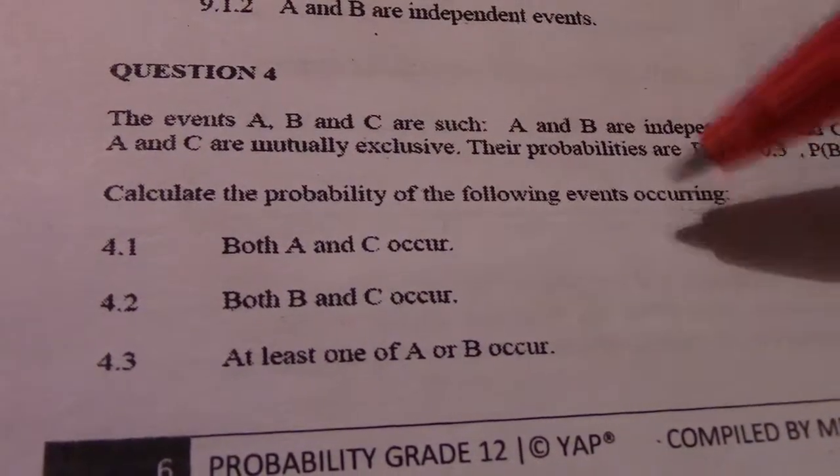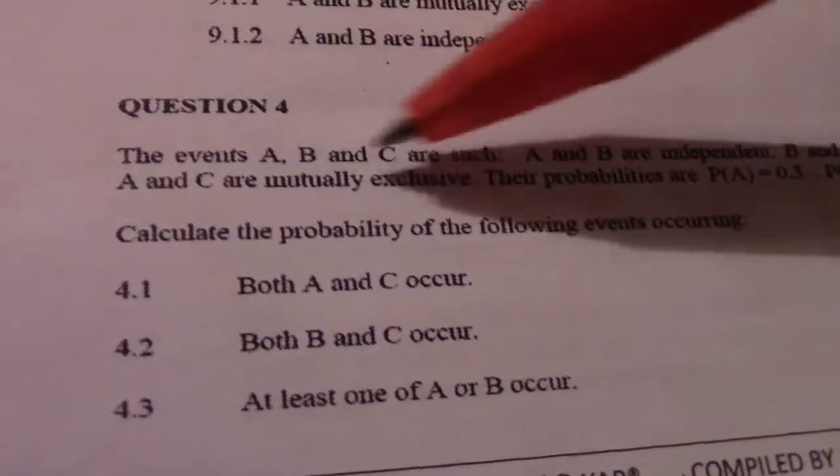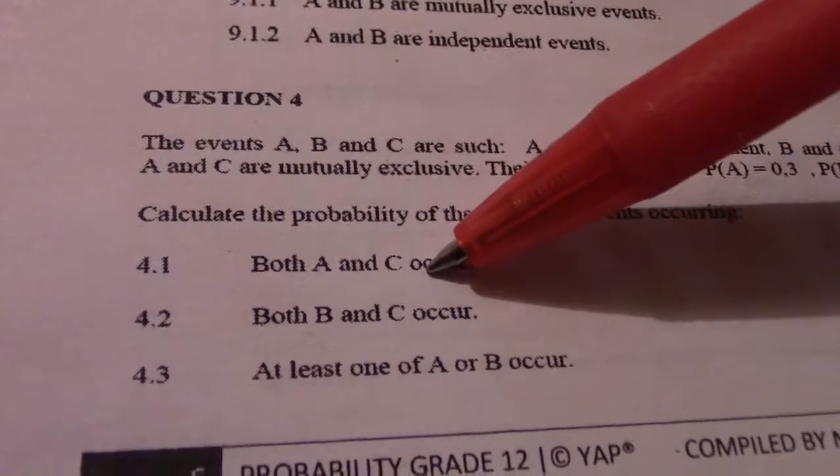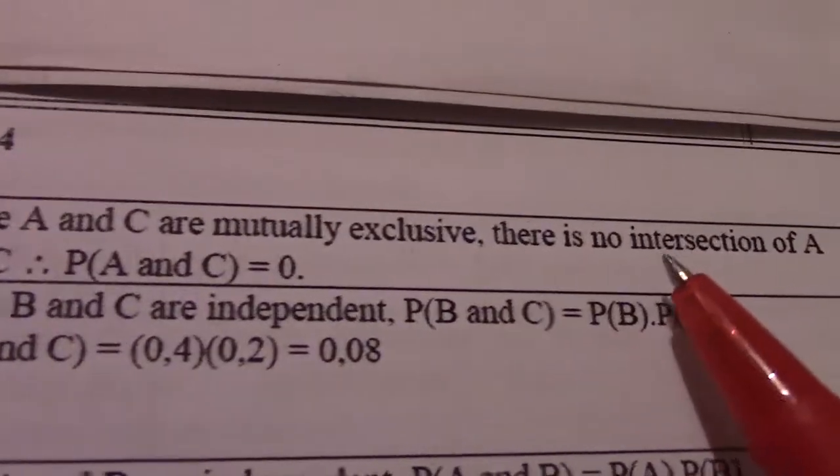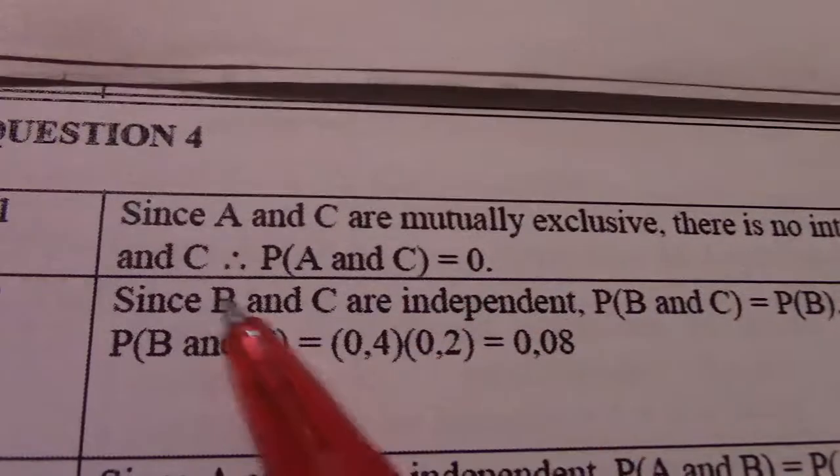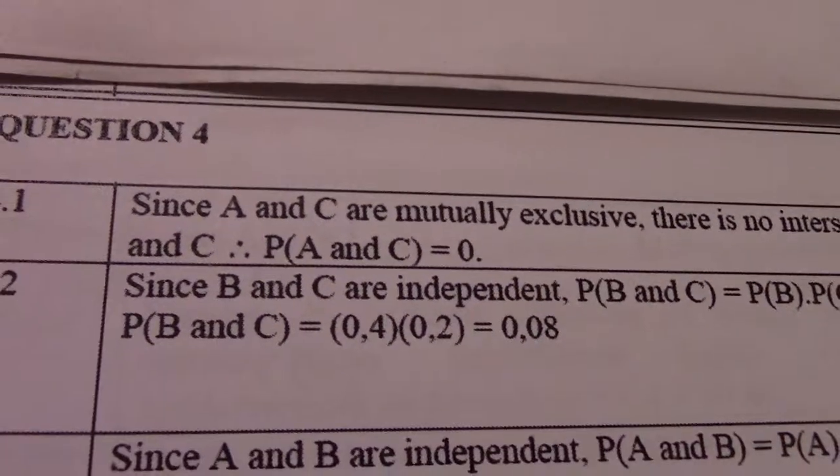Calculate the probability of the following events occurring. Both A and C occur. A and C are mutually exclusive, so probability of that should equal zero. So there, since A and C are mutually exclusive, there is no intersection of A and C, therefore probability A and C equals zero.